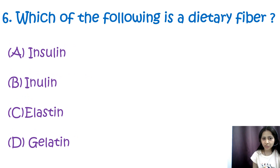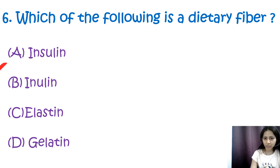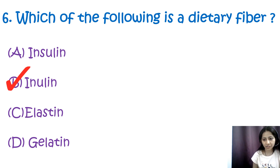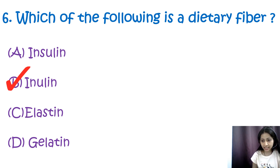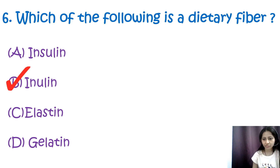Question 6: Which of the following is a dietary fiber? Options are insulin, inulin, elastin, and gelatin. The correct answer is B, inulin. Inulin is a type of dietary fiber found in various plants. It has various health benefits including improving digestive health, helping control diabetes, and aiding in weight loss. Insulin, elastin, and gelatin are not examples of dietary fiber.